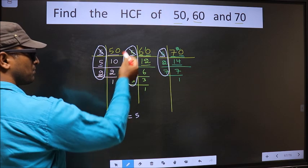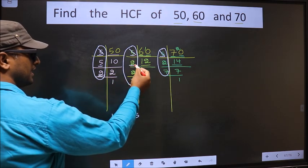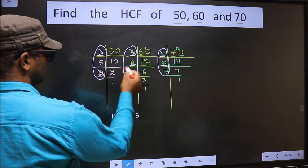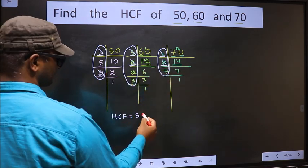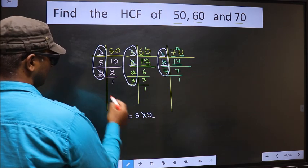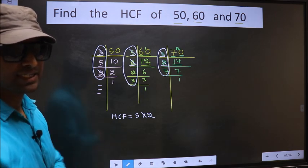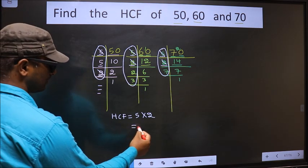Next number 2. Do we have 2 here? Yes. So go to the other place. Do we have 2 here? Yes. So you cut 2 right here. No more numbers are left. Therefore our HCF is 5 into 2.